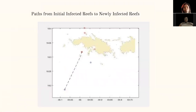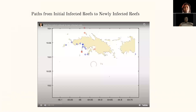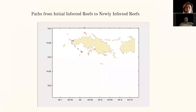Here we have a short movie that depicts the path that SCTLD traveled from the initial affected reefs to newly infected reefs. The red circles represent the initial affected reefs, while the blue circles represent newly affected reefs. The black line between each set of circles represents the distance the disease traveled between the reef sites.